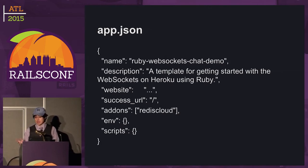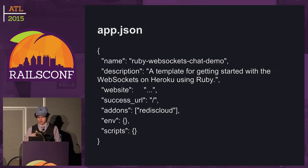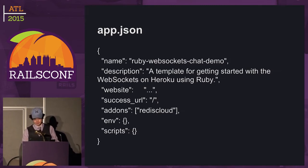In addition, you can set up environment variables — if you need specific environment variables to get the app up and running, you can specify all that stuff here as a hash inside the JSON. You can also specify scripts you need to run, like post-deploy hooks. So that's the app.json — once you include that as well as the deploy button in your README, your app is good to go.